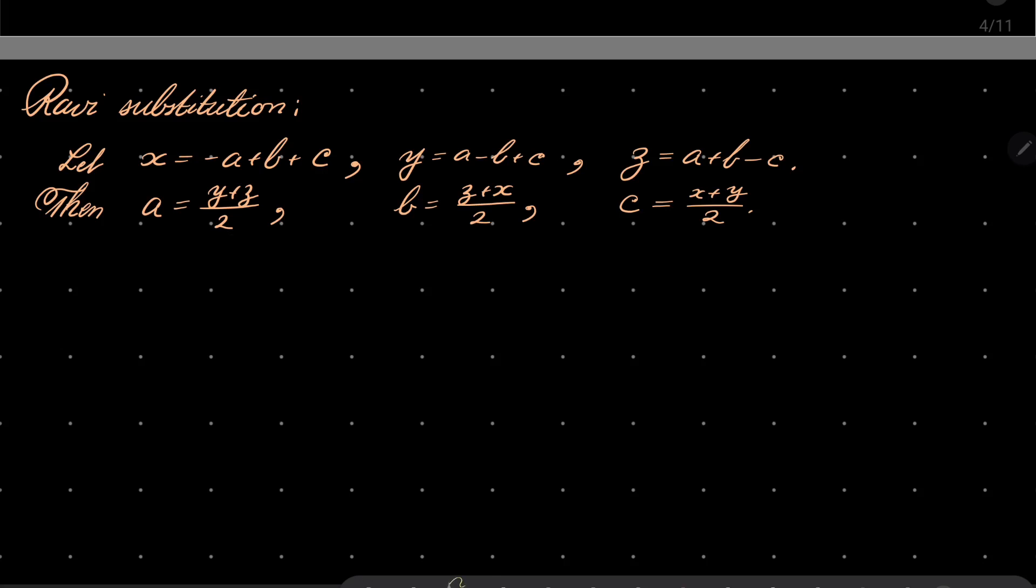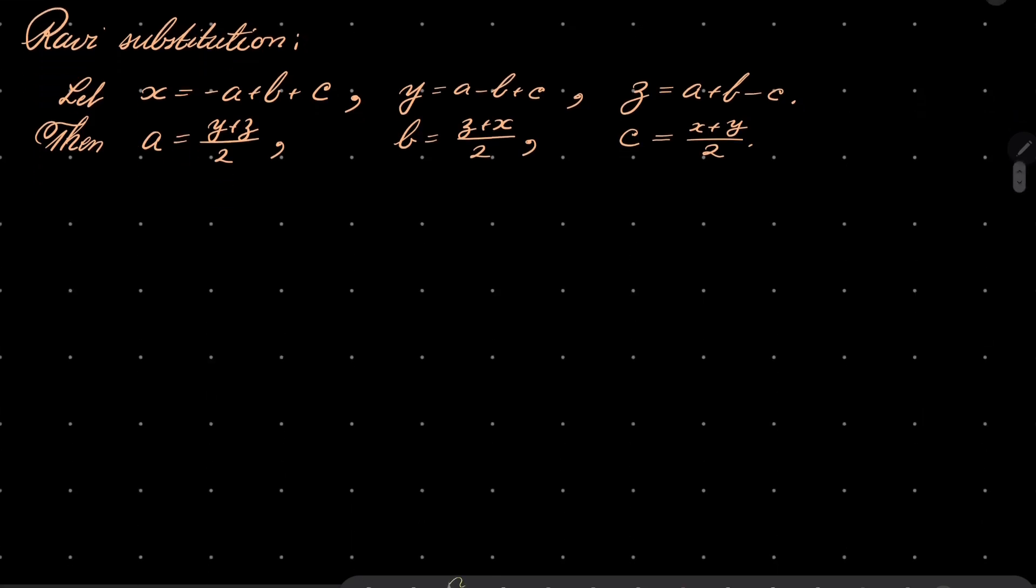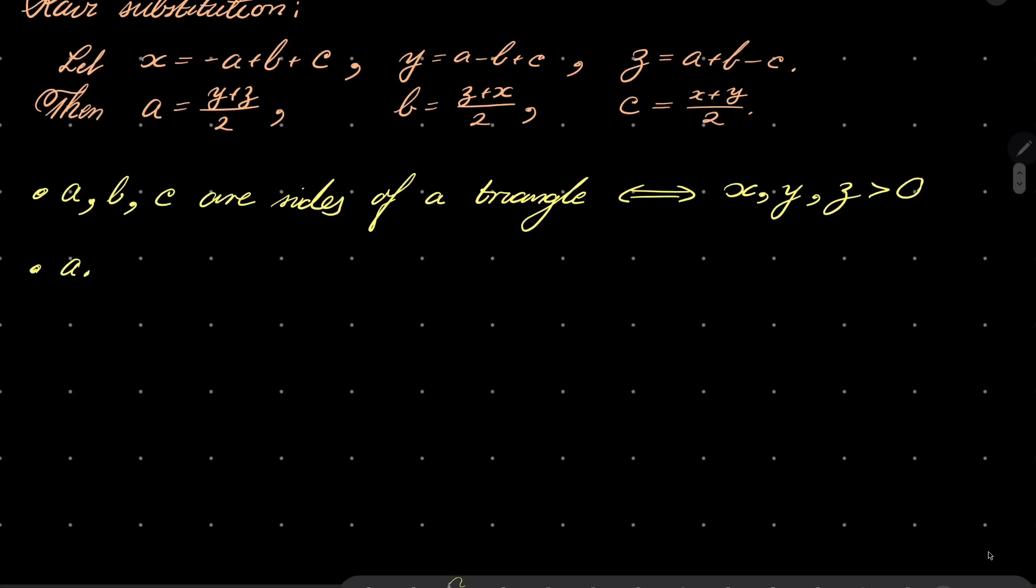Also notice that a, b, c are sides of a triangle if and only if x, y, and z are positive integers.